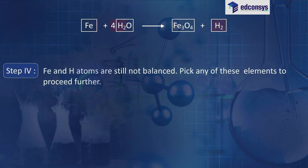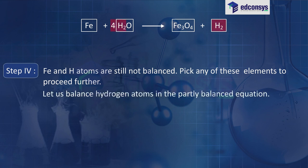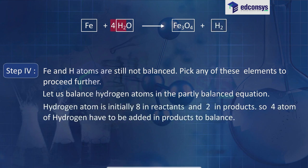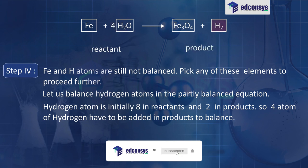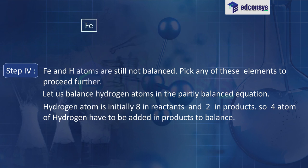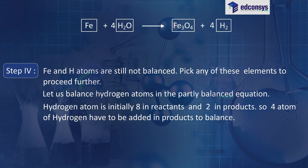Fe and H atoms are still not balanced. Let us balance hydrogen atoms in the partly balanced equation. Hydrogen is initially 8 in reactants and 2 in products, so 4 atoms of hydrogen have to be added in products to balance. The equation becomes: Fe + 4H₂O → Fe₃O₄ + 4H₂.